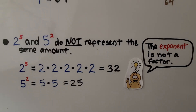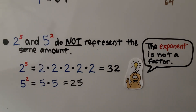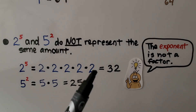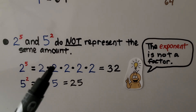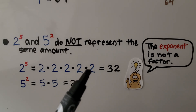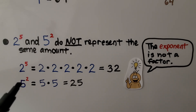Be careful: 2 raised to the fifth power and 5 raised to the second power do not represent the same amount. The exponent is not a factor. 2 raised to the fifth power means we multiply 2 by itself 5 times: 2 times 2 is 4, times 2 is 8, times 2 is 16, times 2 is 32. 5 raised to the second power is just 5 times 5, which is 25. The exponent is not a factor.